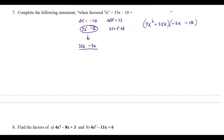I look at the first group and pull out the GCF. The greatest common factor between 7 and 35 is 7, and both terms have an x, so I factor out 7x. Dividing: 7x² divided by 7x is x, and 35x divided by 7x is plus 5.